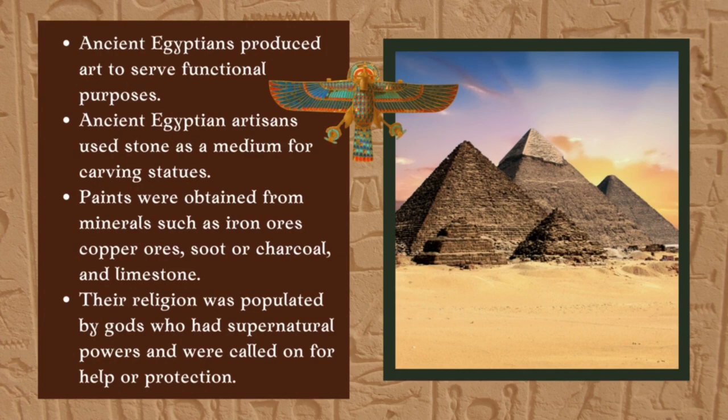Egyptian art was also very conservative, and the art style changed very little over time. Paints were obtained from minerals such as iron ores, copper ores, soot or charcoal, and limestone.